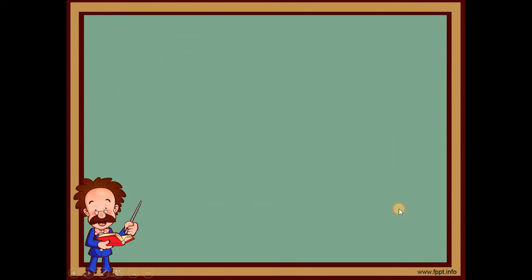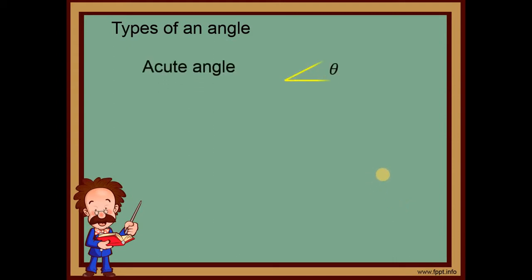Okay, let's move on and have a review on types of angles. First, we have an acute angle. Ano nga ba ang acute angle? An acute angle measures less than 90 degrees. So all angles that are less than 90 degrees, we call them acute angles.